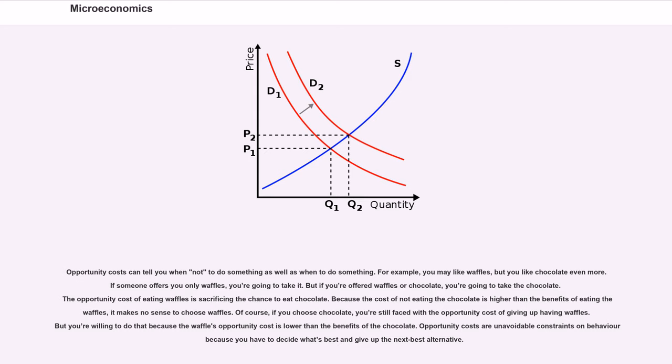Opportunity costs can tell you when not to do something as well as when to do something. For example, you may like waffles, but you like chocolate even more. If someone offers you only waffles, you're going to take it. But if you're offered waffles or chocolate, you're going to take the chocolate. The opportunity cost of eating waffles is sacrificing the chance to eat chocolate. Because the cost of not eating the chocolate is higher than the benefits of eating the waffles, it makes no sense to choose waffles. Of course, if you choose chocolate, you're still faced with the opportunity cost of giving up having waffles. But you're willing to do that because the waffle's opportunity cost is lower than the benefits of the chocolate. Opportunity costs are unavoidable constraints on behavior because you have to decide what's best and give up the next best alternative.